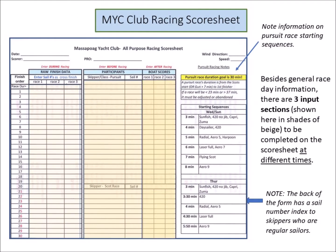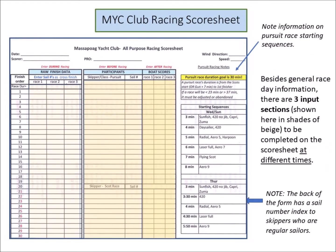Now let's look at the MYC all-purpose score sheet for club racing. This form has space for three one-design races and three pursuit races. If there are more races, multiple forms can be used. Besides the input areas for recording finish data, the right side of the form contains instructional information on pursuit race starting sequences.